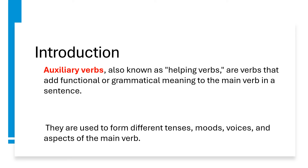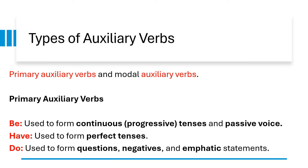In English, the auxiliary verbs are be, have and do. There are two main types of auxiliary verbs: primary auxiliary verbs and modal auxiliary verbs. Primary auxiliary verbs include be, have and do. Be is used to form continuous or progressive tenses and passive voice. Have is used to form perfect tenses, and do is used to form questions, negatives and emphatic statements.